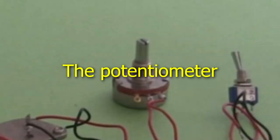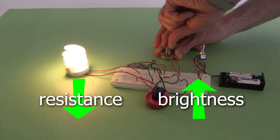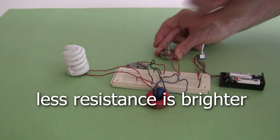I was asked what effect the variable resistor or potentiometer has. As you can see, decreasing the resistance increases the brightness, and increasing the resistance decreases the brightness. So less resistance is brighter.